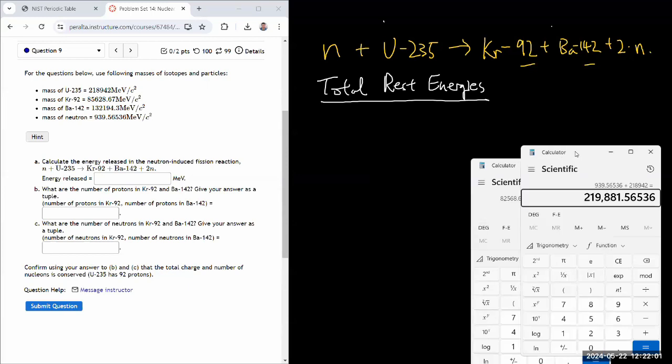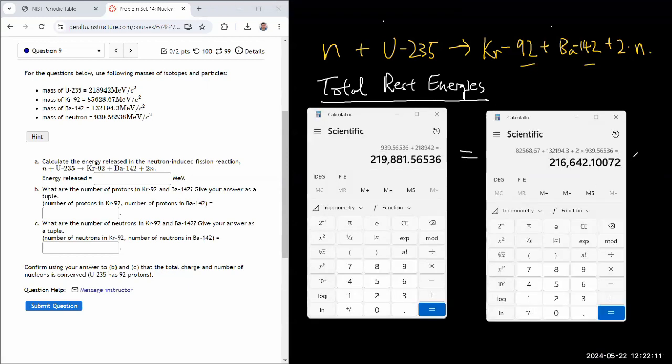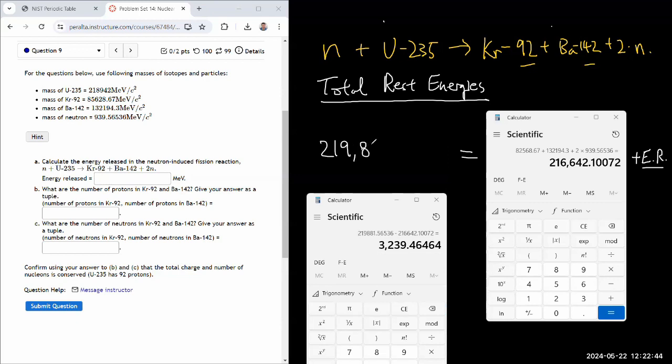So the way it works out is this amount in the product plus energy released. So the difference is the energy released. So let me take that difference. 219,881.56536 MeV was equal to this plus that. And that, the energy released, is going to be 3,239 MeV.